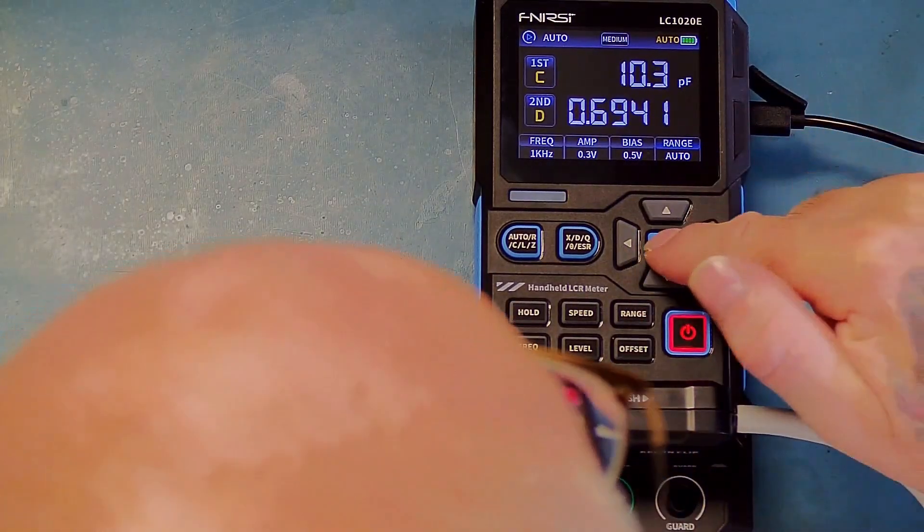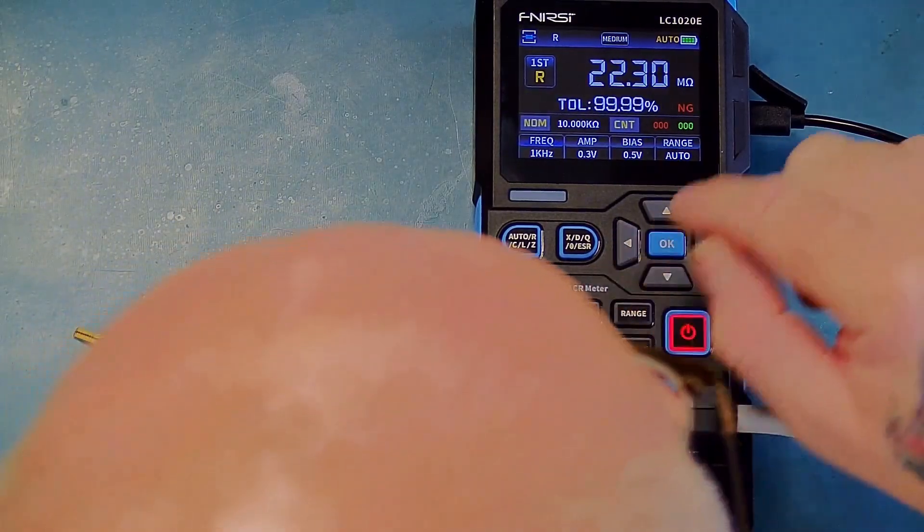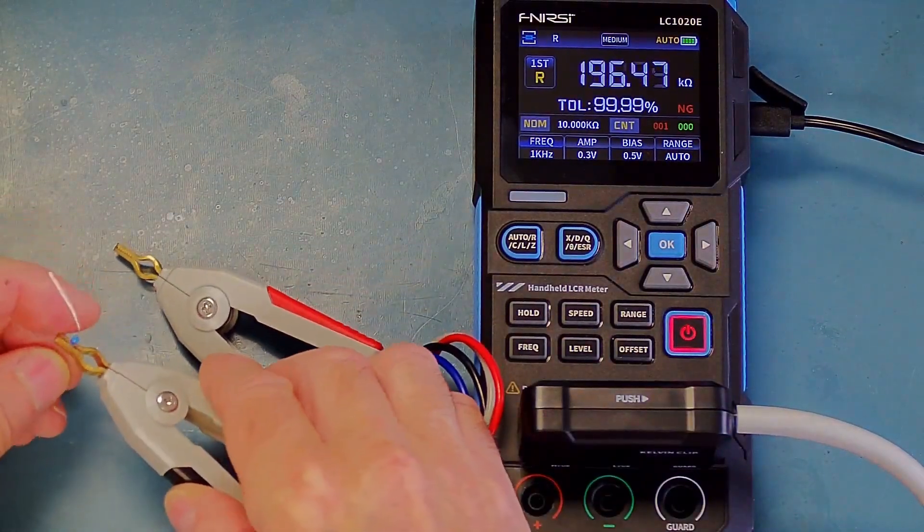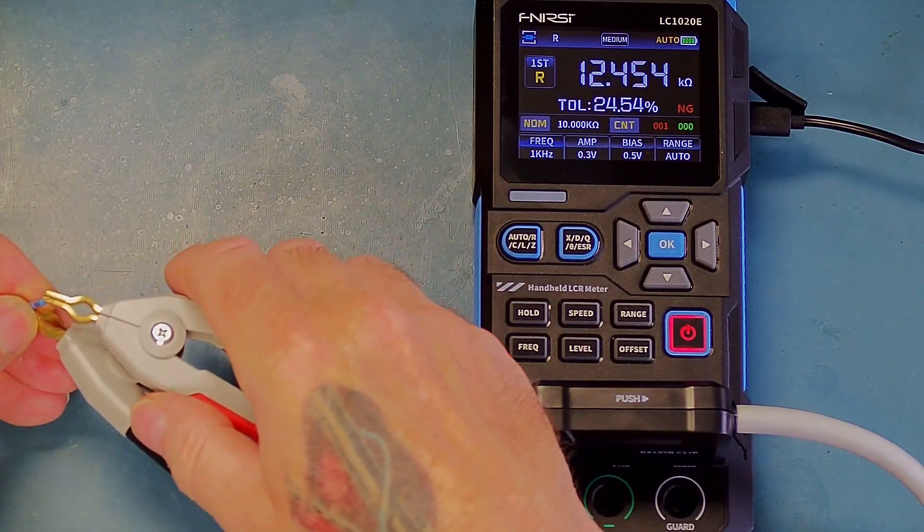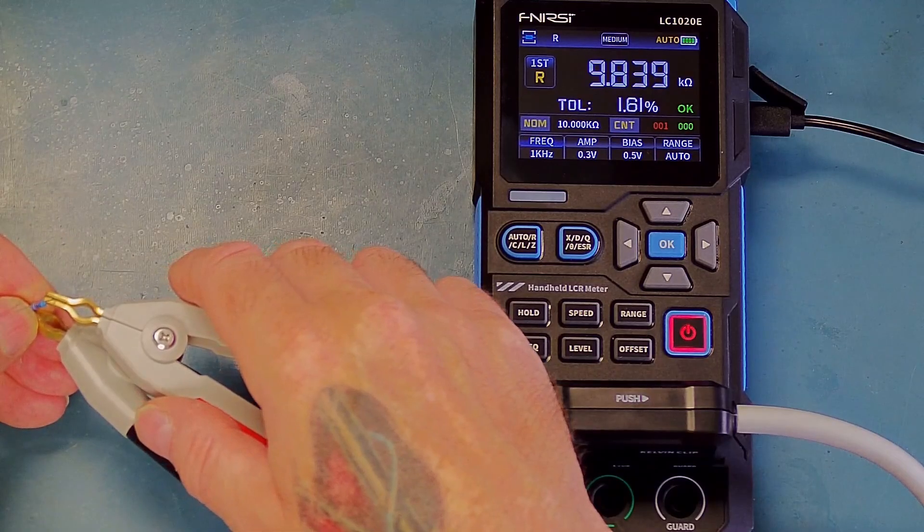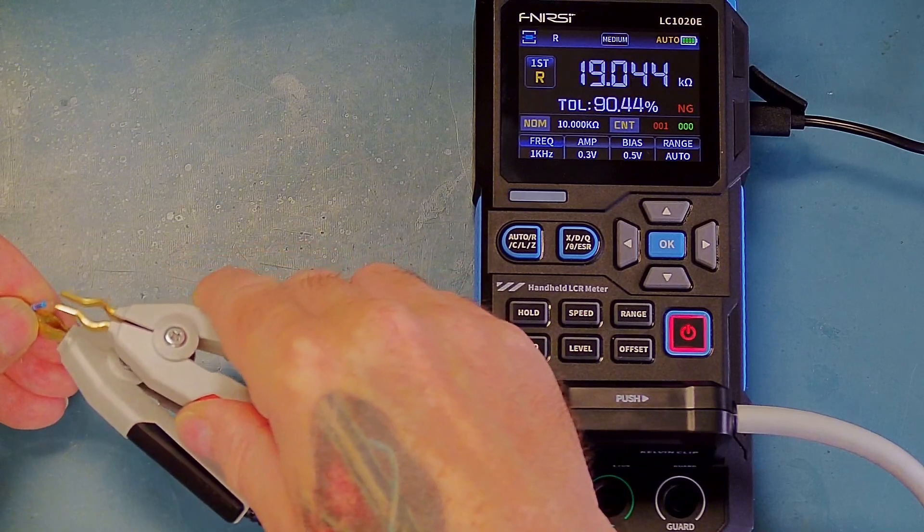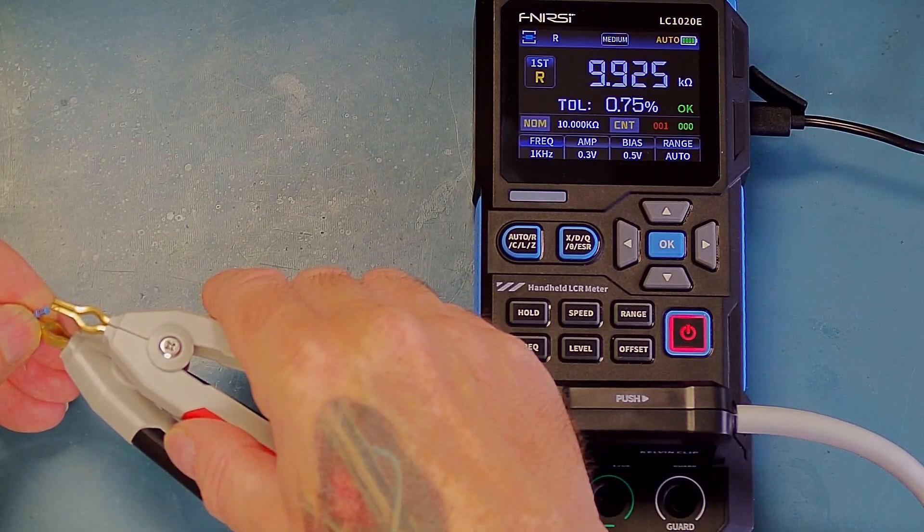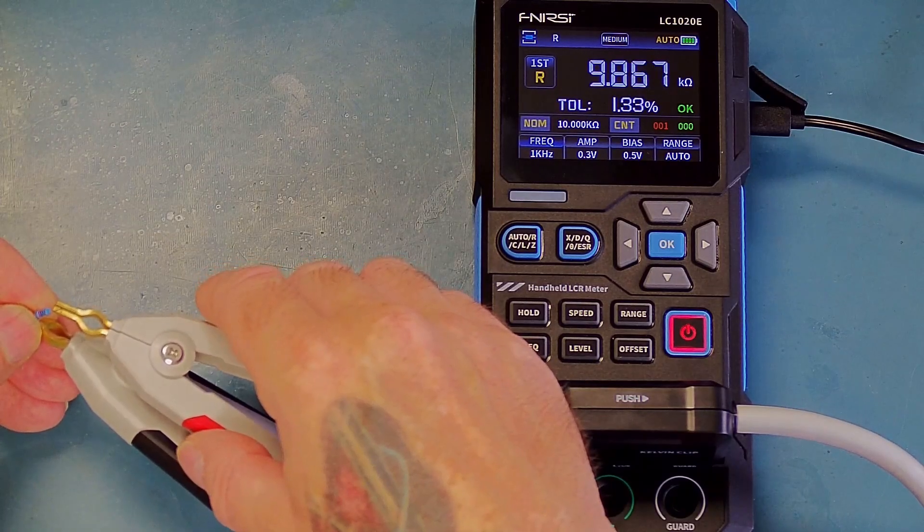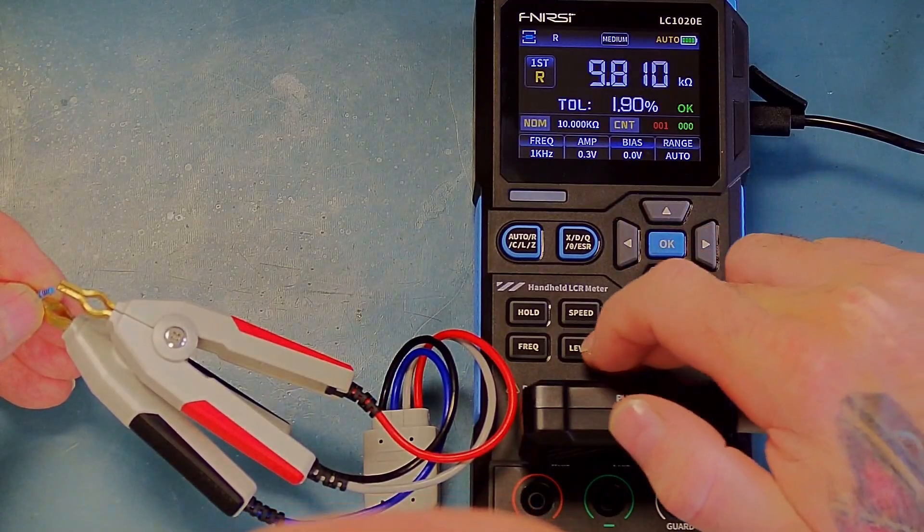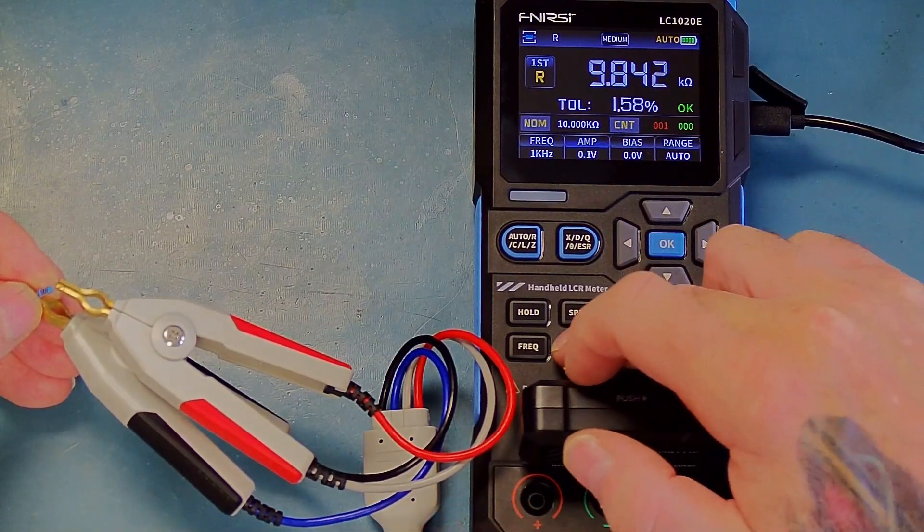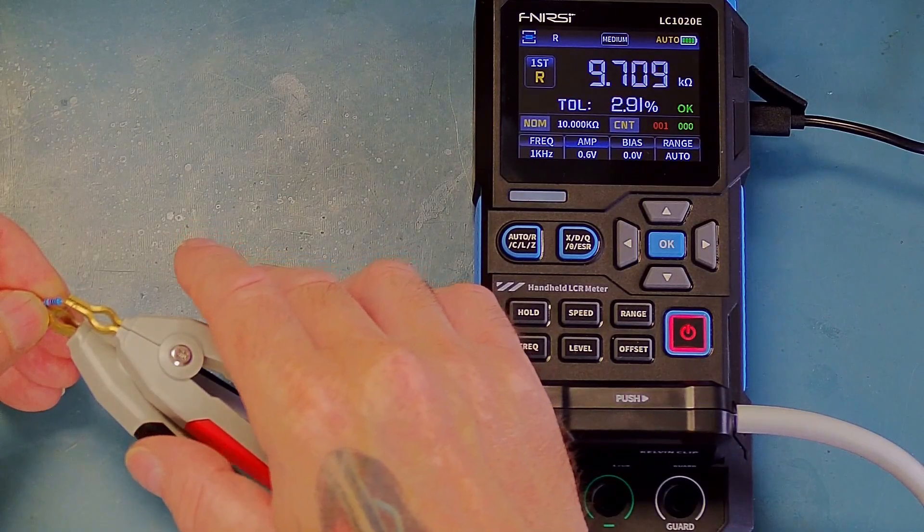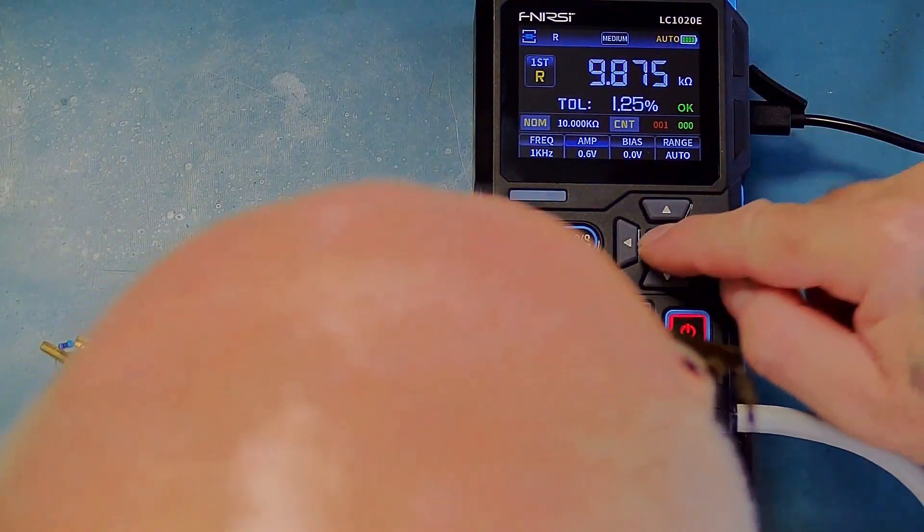The sorting function still has my 10k in there, so let's connect the resistor. Okay, so it's actually a pass but it's come up as a fail. Yeah, it still doesn't really seem to be working. Let me just check to make sure it has actually done the firmware upgrade.